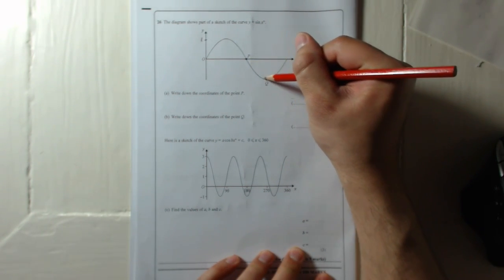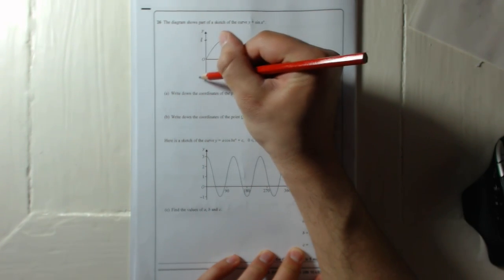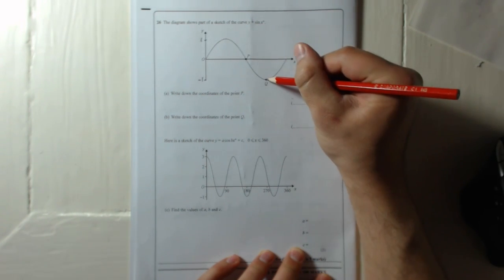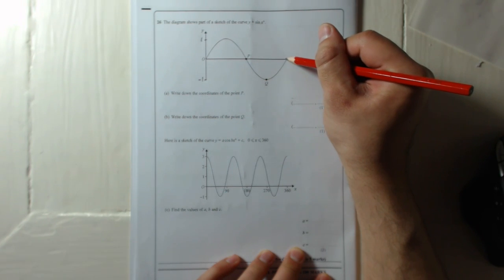And then it gets down here, and that's level with minus 1, so I'm going to put here minus 1, and it goes up and finishes at 0,0 there.